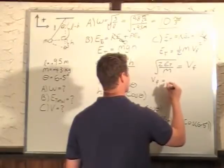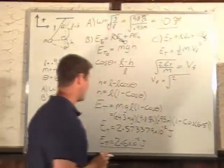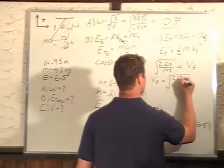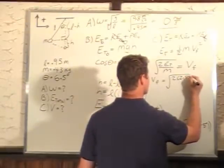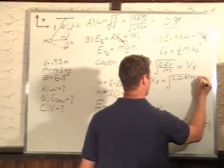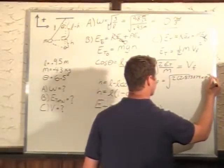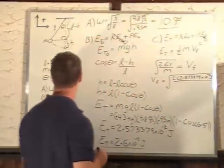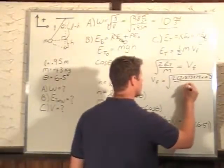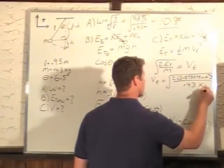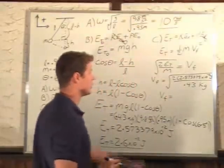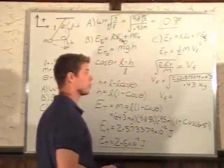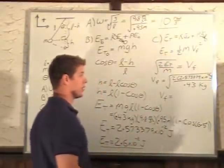Let's plug in some numbers. Two times our energy—we're going to plug this whole long thing in there to keep all our decimal places—two times 2.573379 times 10 to the minus 2 joules, all over our mass of 0.43 kilograms. If we look at the units, joules is kilogram meter squared per second squared, so the square root gives us meters per second, which is correct.